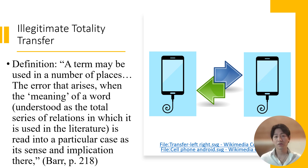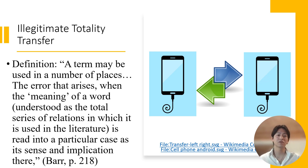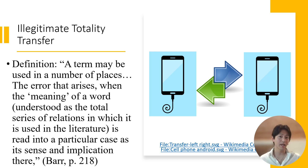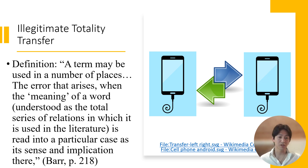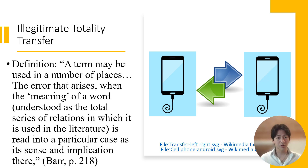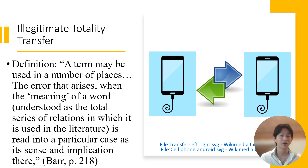Another famous error that James Barr pointed out is what he named 'illegitimate totality transfer.' What does this mean? It's when a term may be used in a number of places with multiple meanings, and this error arises when the meaning of a word — understood as the total series of relationships in which it is used in the literature — is read into a particular case as its sense and implication there. In other words, this error occurs when you open a dictionary, see a bunch of various meanings for a term, and simply pick whichever sounds better or more appealing, declaring that must be the right meaning in this biblical text.